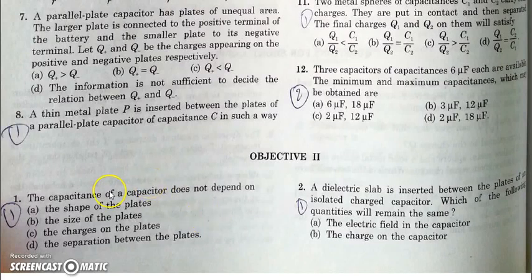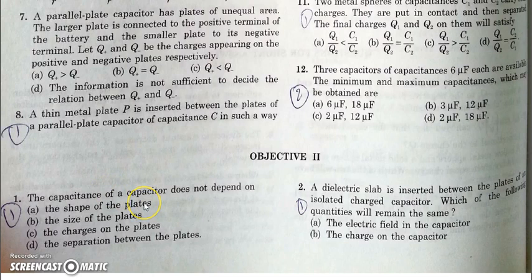Objective two: capacitors. In the first question, it is asked that capacitance does not depend on which of the following parameters. Obviously, it doesn't depend on the charge on the plates. Though it is defined as q by v, it is independent of both.